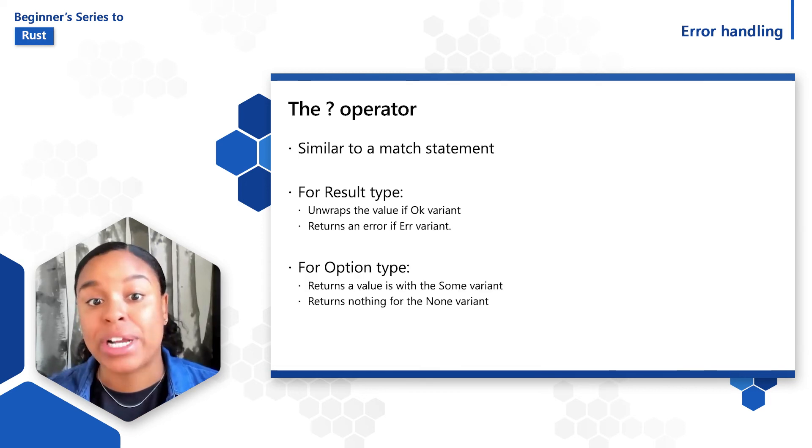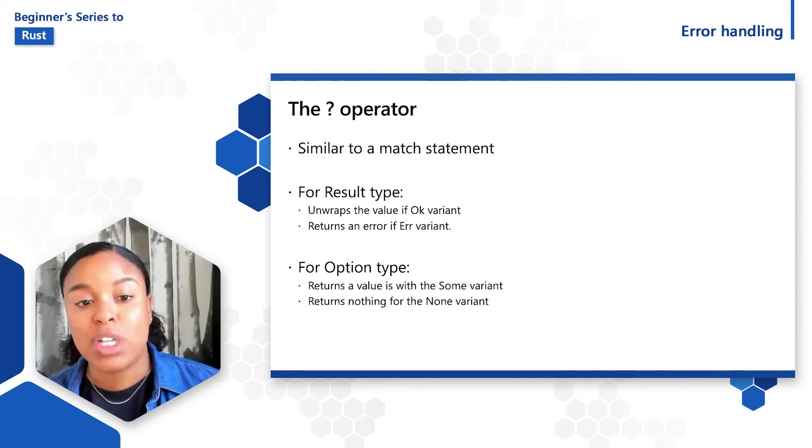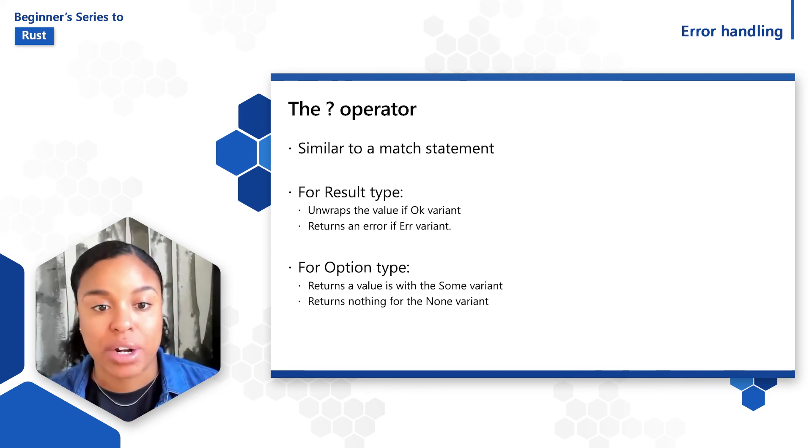The question mark operator can also be used with the option enum, where a value will be returned for some variant of T and none will be returned for the none variant. Instead of needing a match statement, only the question mark operator is needed. This makes the code cleaner and still allows us to handle errors nicely, passing them up the call stack.